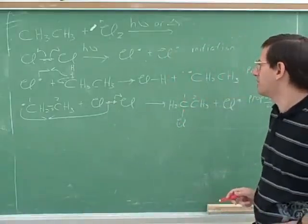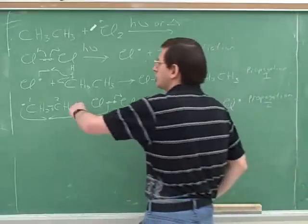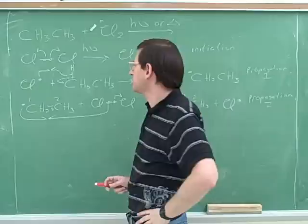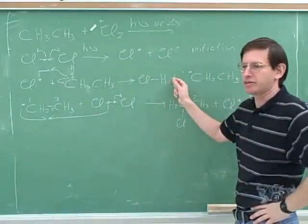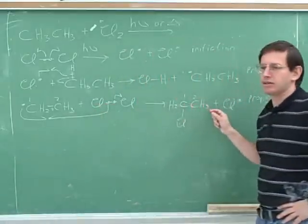By the way, this is a good rule of thumb for distinguishing between initiation and propagation. Here in initiation, we went from no radicals to two radicals. But in the propagation steps, we start with a radical and a non-radical and make a different radical and a non-radical. Again, we started with a radical and a non-radical, and we made a different radical and a non-radical.